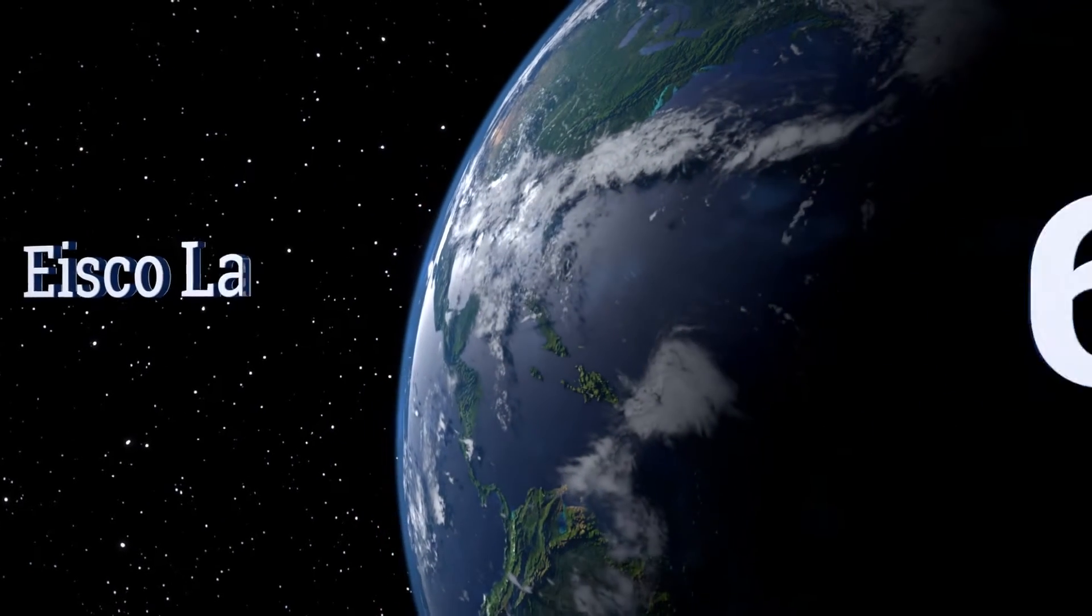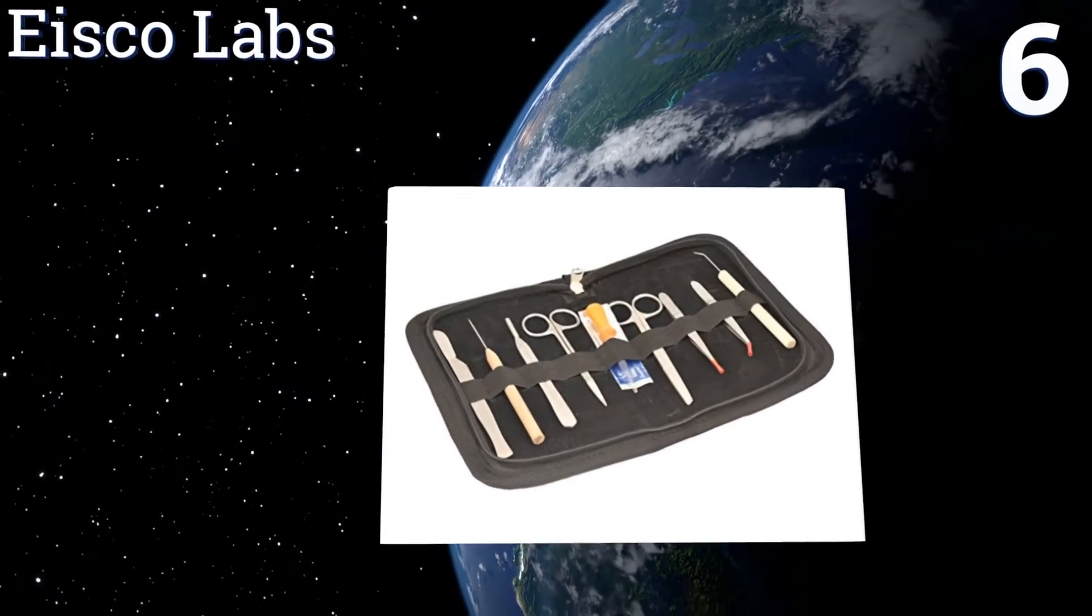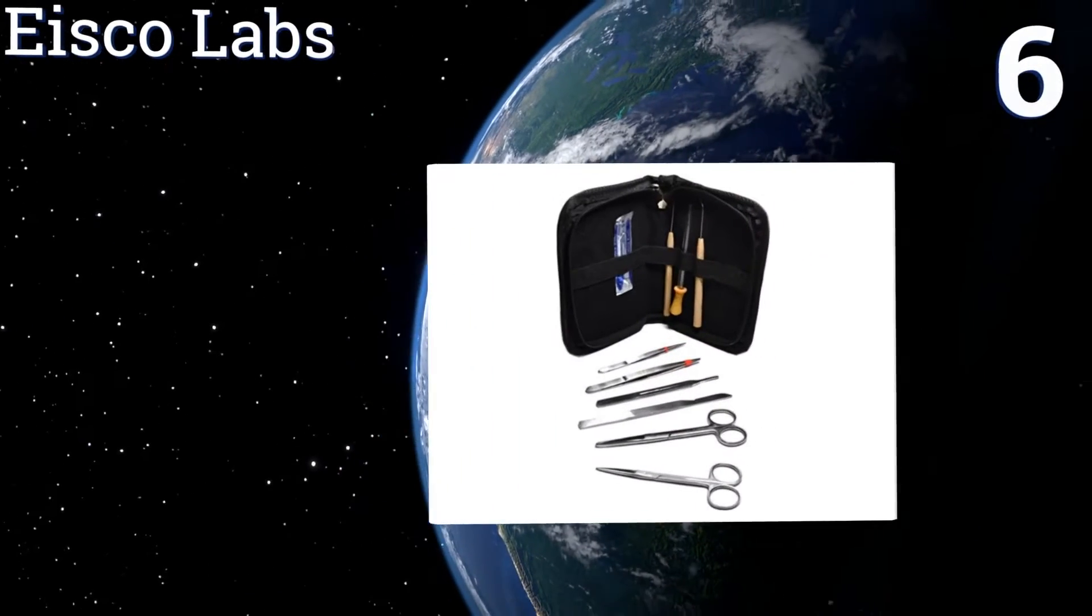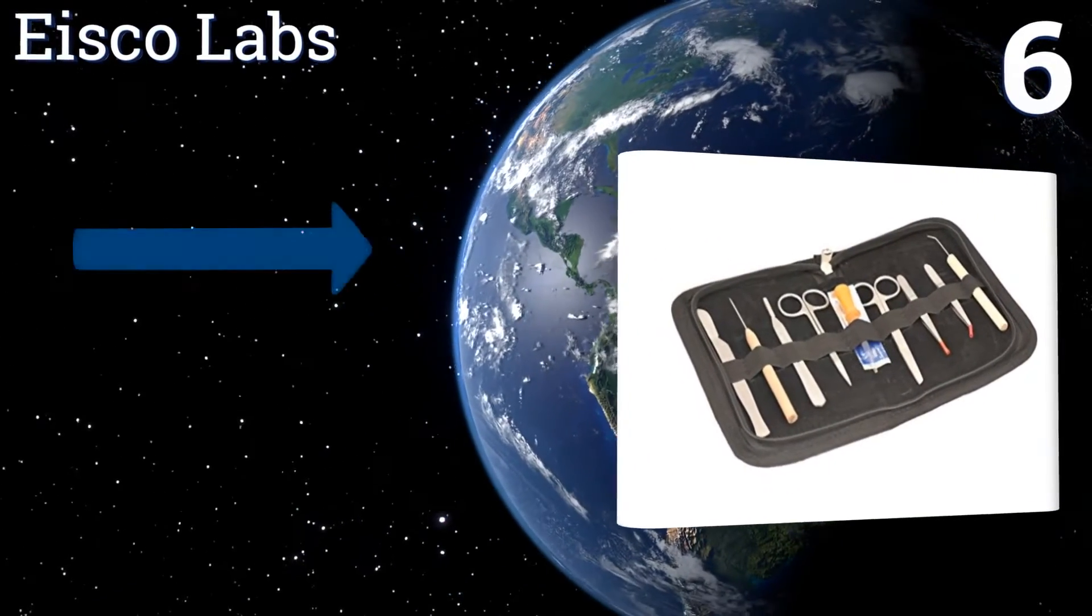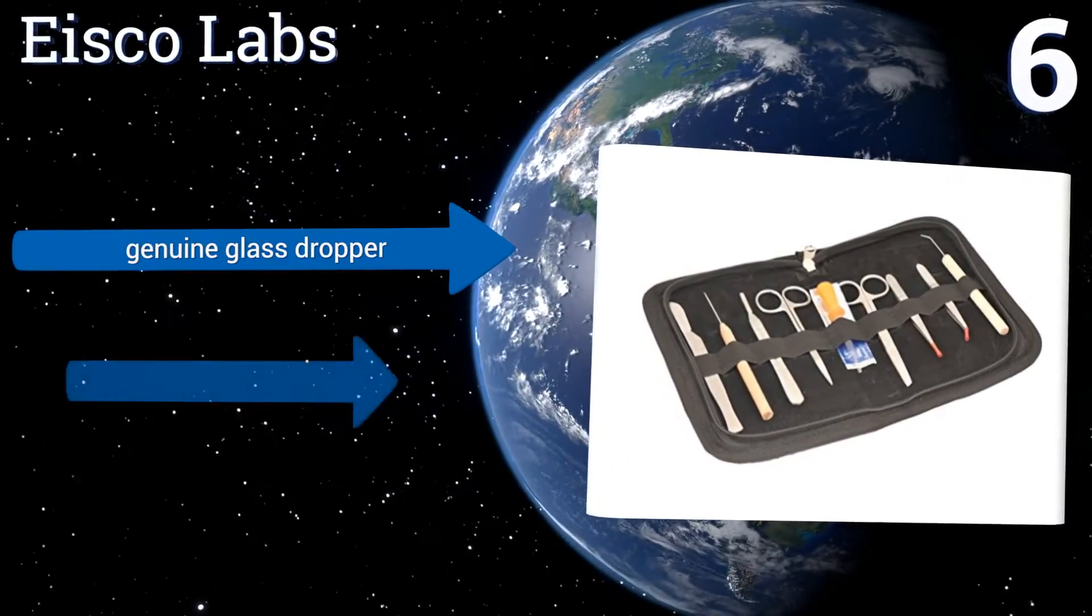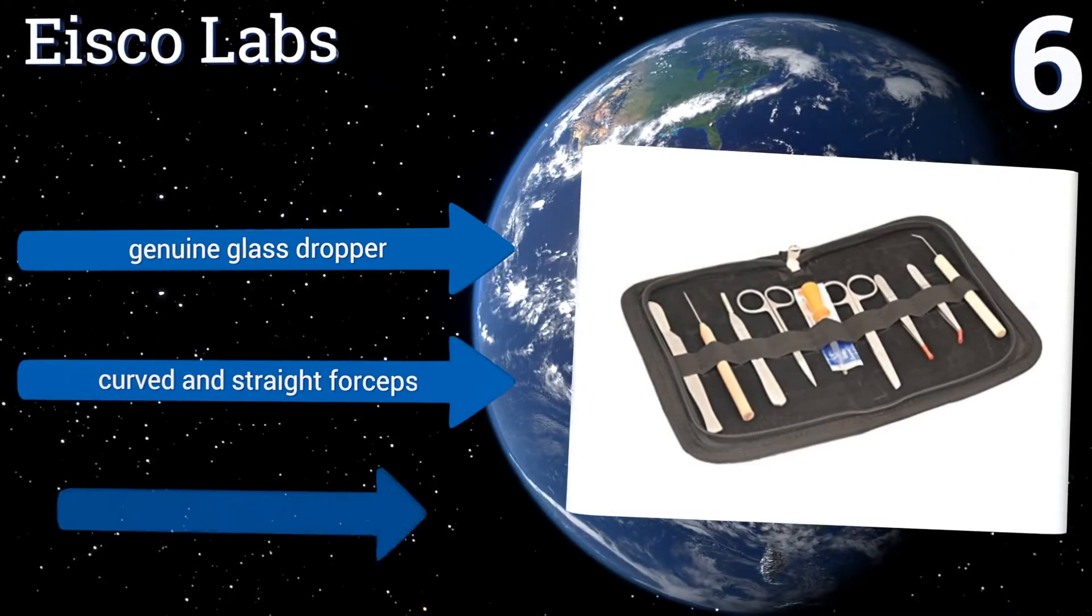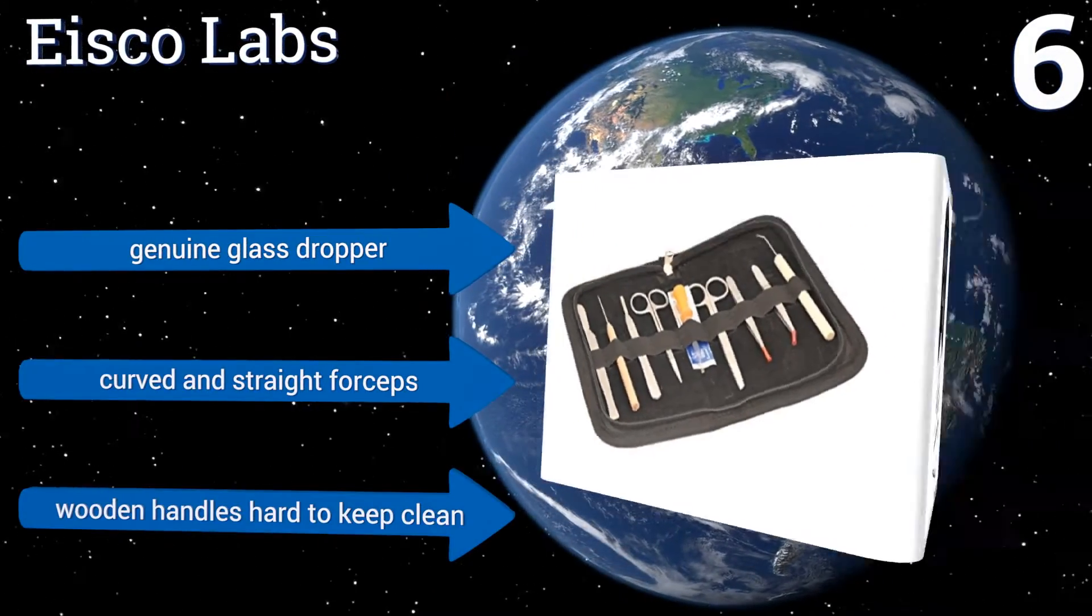At number 6, the 9 tools that come in this ISCO lab set are housed in a generously large storage case that allows a student or scientist to easily select the proper implement for each task. The spacious case size also reduces the risk of cross-contamination between tools.